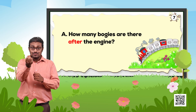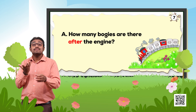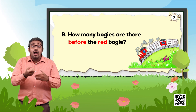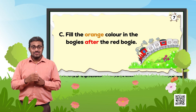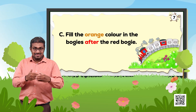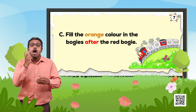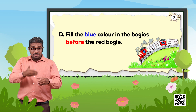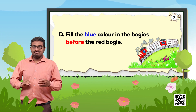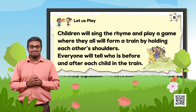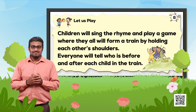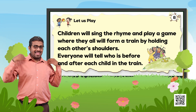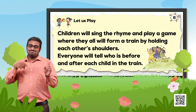A: How many bogeys are there after the engine? B: How many bogeys are there before the red bogey? C: Fill the orange color in the bogeys after the red bogey. D: Fill the blue color in the bogeys before the red bogey. Children will sing the rhyme and play a game where they form a train by holding each other's shoulders, and everyone will tell who is before and after each child in the train.